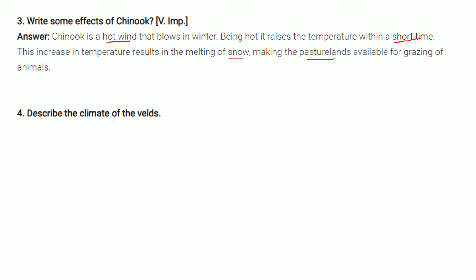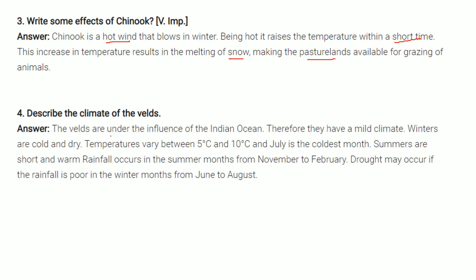Describe the climate of the velds. The velds are under the influence of the Indian Ocean, therefore they have a mild climate. Winters are cold and dry with temperatures varying between 5°C to 10°C, and July is the coldest month. Summers are short and warm; rainfall occurs in the summer months from November to February. Drought may occur if the rainfall is poor in the winter months from June to August.